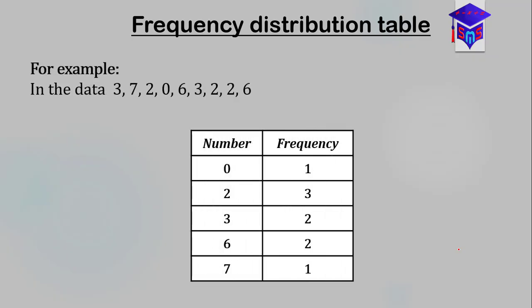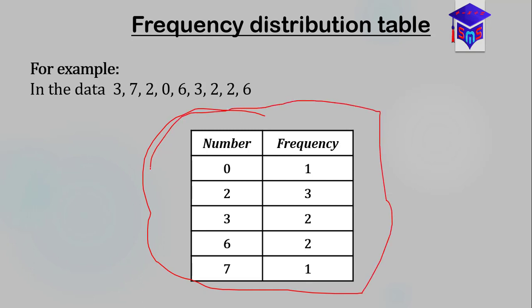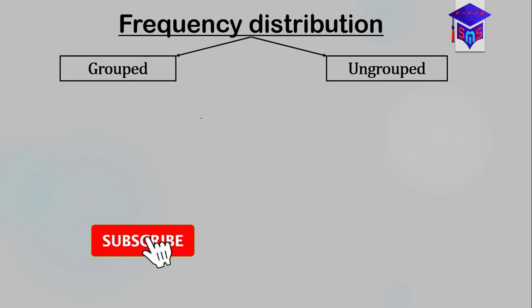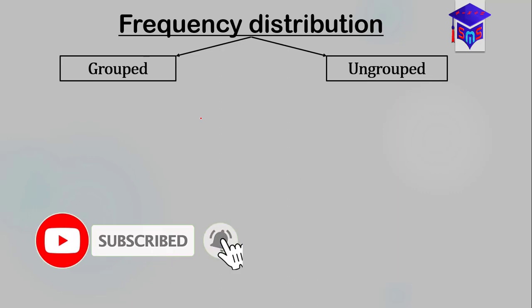From the previous example we had this simple data set and we were able to put it in a nice table. This table is called a frequency distribution table — the table in which you have allocated the individual frequencies to their corresponding numbers. The frequency distribution can be grouped or ungrouped.